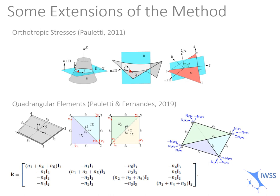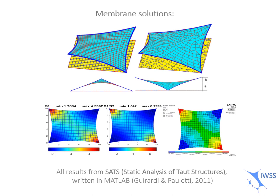Here are some solutions of orthotropic membranes. As you can see, the middle saddle point is above the mid-height of the supports. You can see here the results of the natural force density method and its comparison to the same problem using the nonlinear equations in ANSYS. As you can see, the results basically match. All these results I'm showing you of the natural force densities and force densities are from SATS, Static Analysis of Taut Structures. This is a routine written in MATLAB by Guirardi and Pauletti.